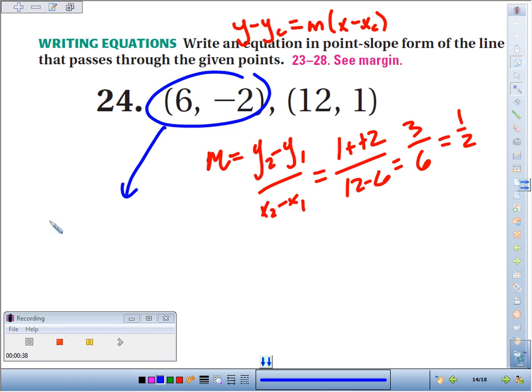If you pick the blue point, you'd have y minus the y coordinate, which is negative 2, equals our slope 1/2 times x minus our x coordinate, 6.